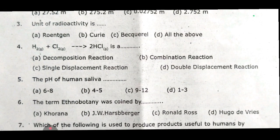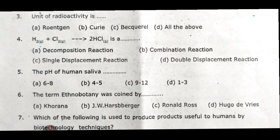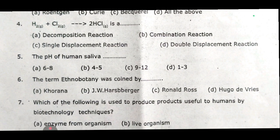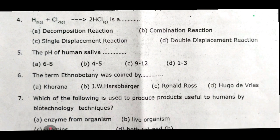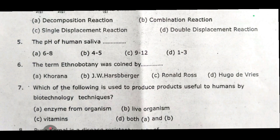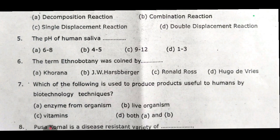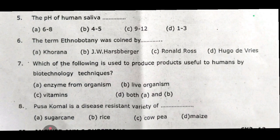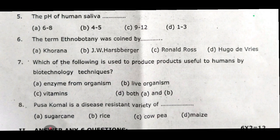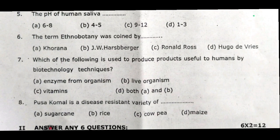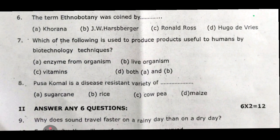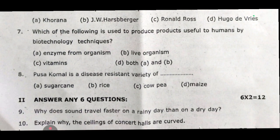Fourth one: H2 plus Cl2 equal to 2HCl is a dash reaction. Fifth one: the pH of human saliva is dash. Sixth one: the term ethnobotany was coined by dash. Seventh one: which of the following is used to produce products useful to humans by biotechnology techniques?